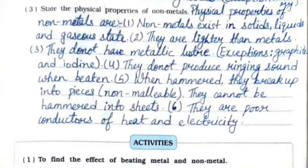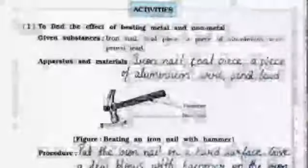Third: state the physical properties of non-metals. First: non-metals exist in solid, liquid, and gaseous states. Second: they are lighter than metals. Third: they do not have metallic luster — exceptions are graphite and iodine. Fourth: they do not produce a ringing sound when beaten. Fifth: when hammered they break into pieces — they are non-malleable. Sixth: they are poor conductors of heat and electricity.